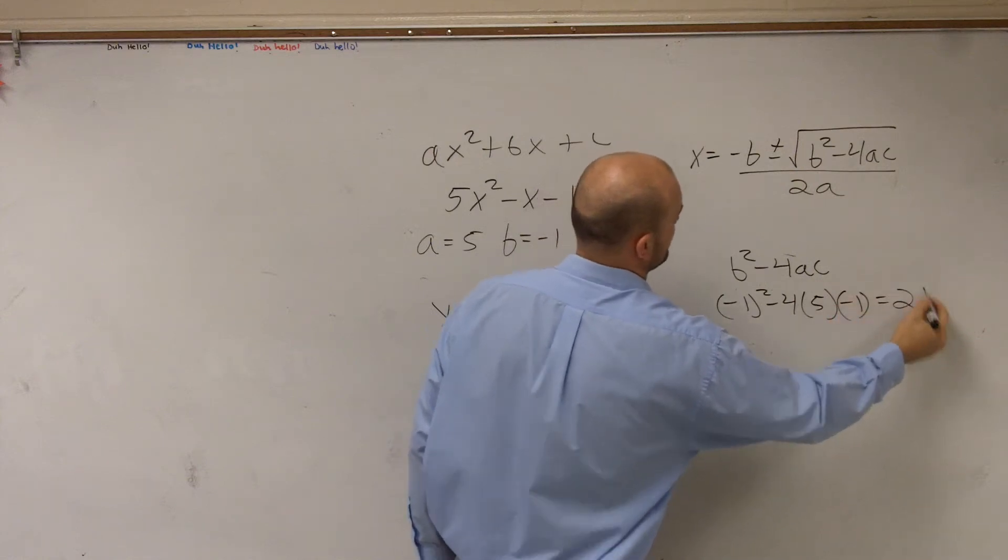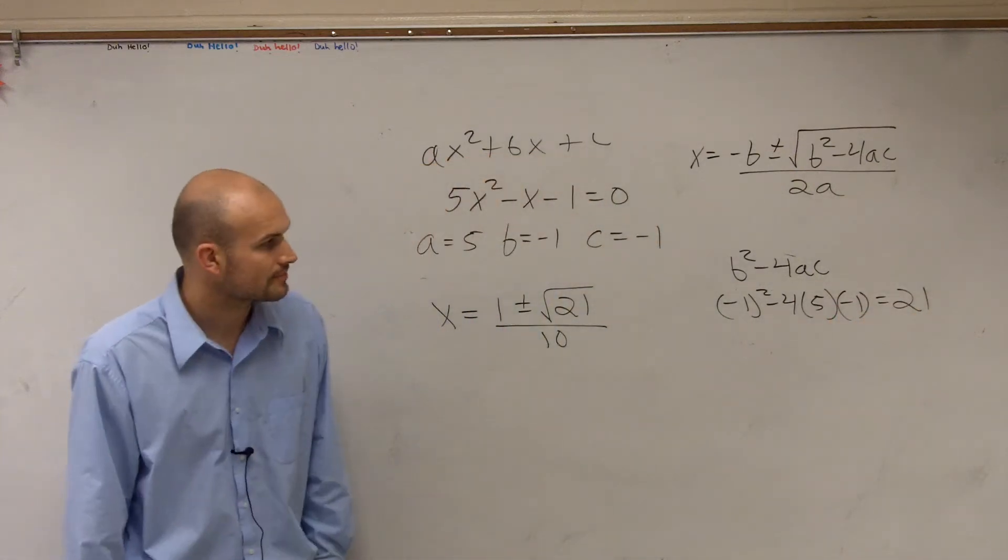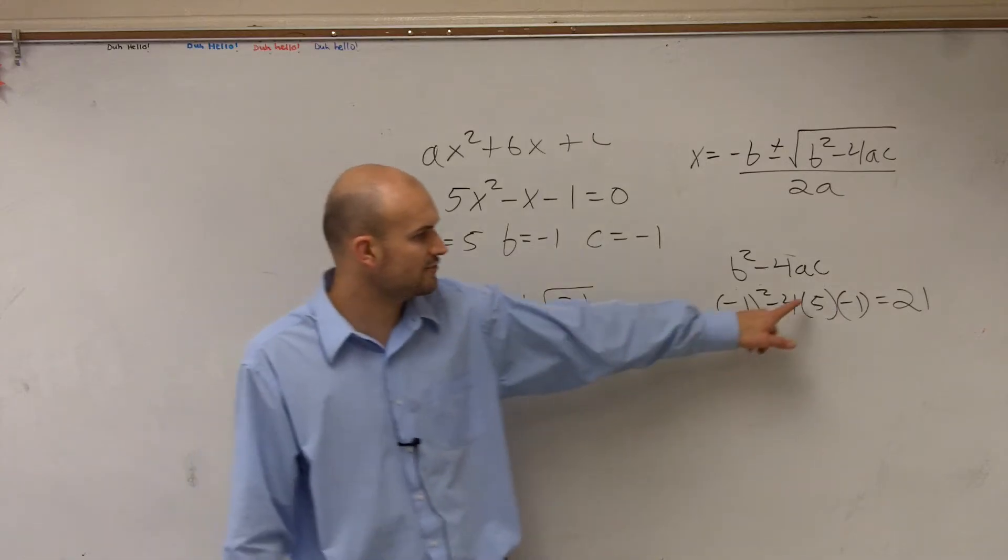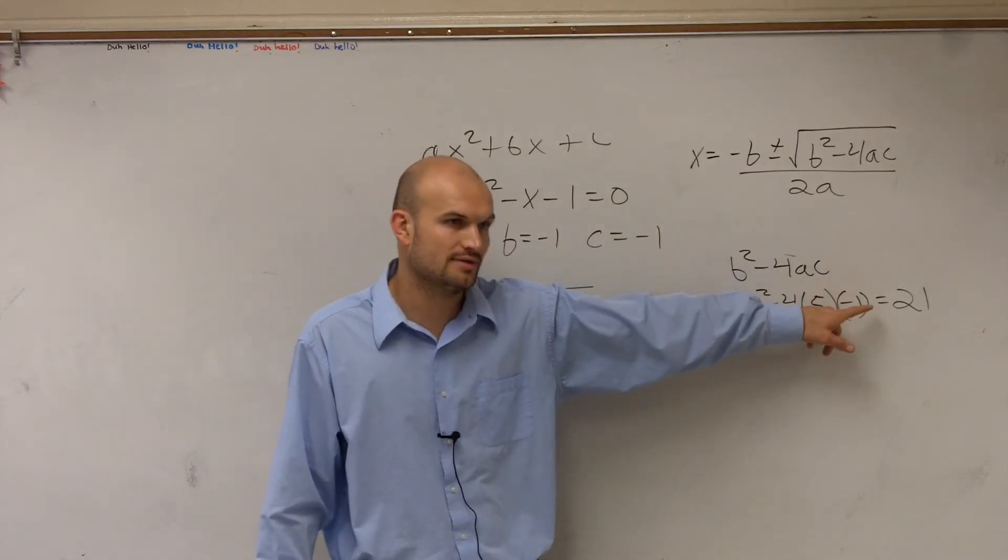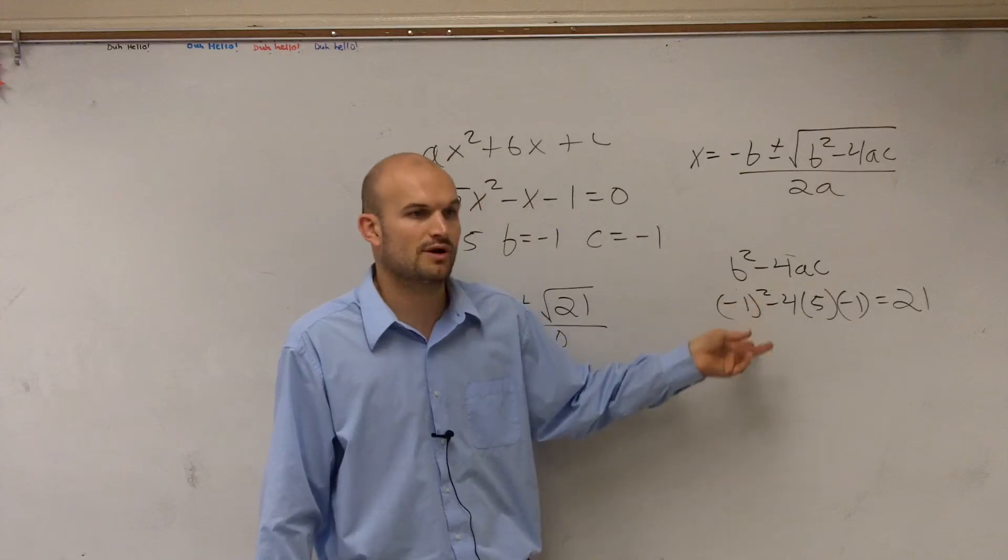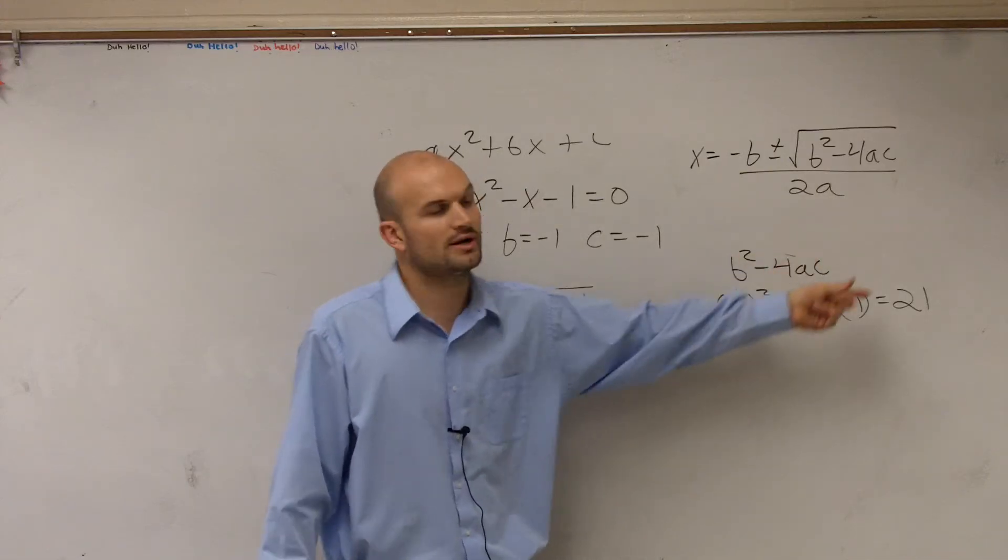This is what I did last video. So you get 4 times 5, negative 4 times 5? Negative 4 times 5 is negative 20, times negative 1 is positive 20. Negative 1 squared is positive 1. 1 plus 20 equals 21.